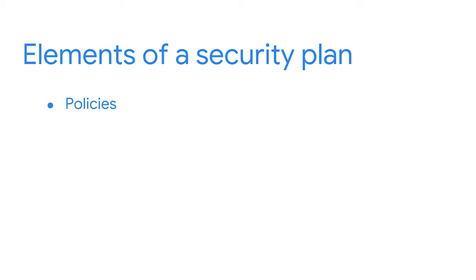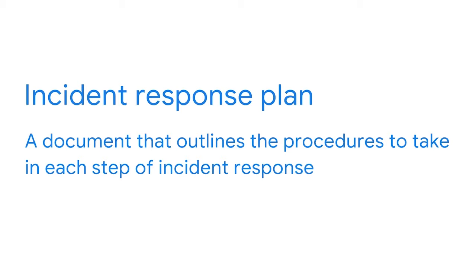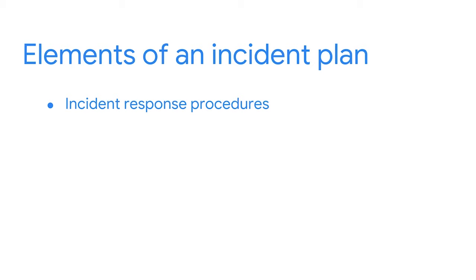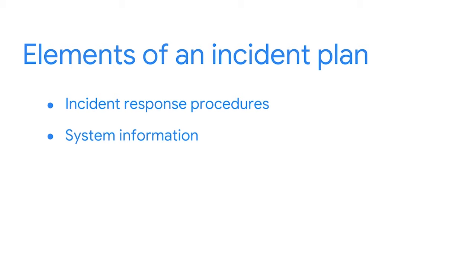Security plans consist of three basic elements: policies, standards, and procedures. An incident response plan is a document that outlines the procedures to take in each step of incident response. Organizations tailor their plans to meet their unique requirements such as their mission, size, culture, industry, and structure. For example, smaller organizations may choose to include their incident response plan in their security plan, while others may choose to have them as separate documents. Common elements include incident response procedures, system information like network diagrams and asset inventories, and other documents like contact lists, forms, and templates.